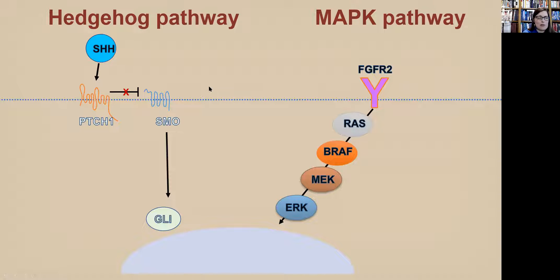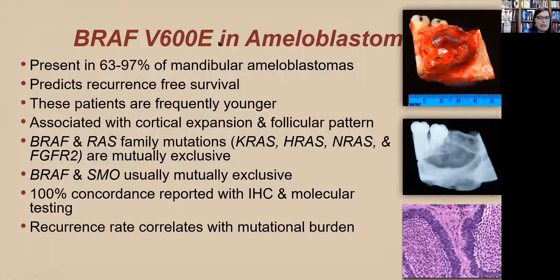Two signaling pathways are relevant in ameloblastoma: the hedgehog pathway with smoothened, and the MAPK (mitogen-activated protein kinase) pathway, where a single amino acid substitution leads to constitutive activation. Normally RAS activates BRAF, leading to a phosphorylation cascade. This pathway is important in colorectal cancer, melanoma, and thyroid cancer. BRAF mutations have been found in about 70% of ameloblastomas and are an independent predictor of recurrence-free survival. Affected patients are frequently younger — about two decades younger — and this mutation is associated with cortical expansion and the follicular pattern.